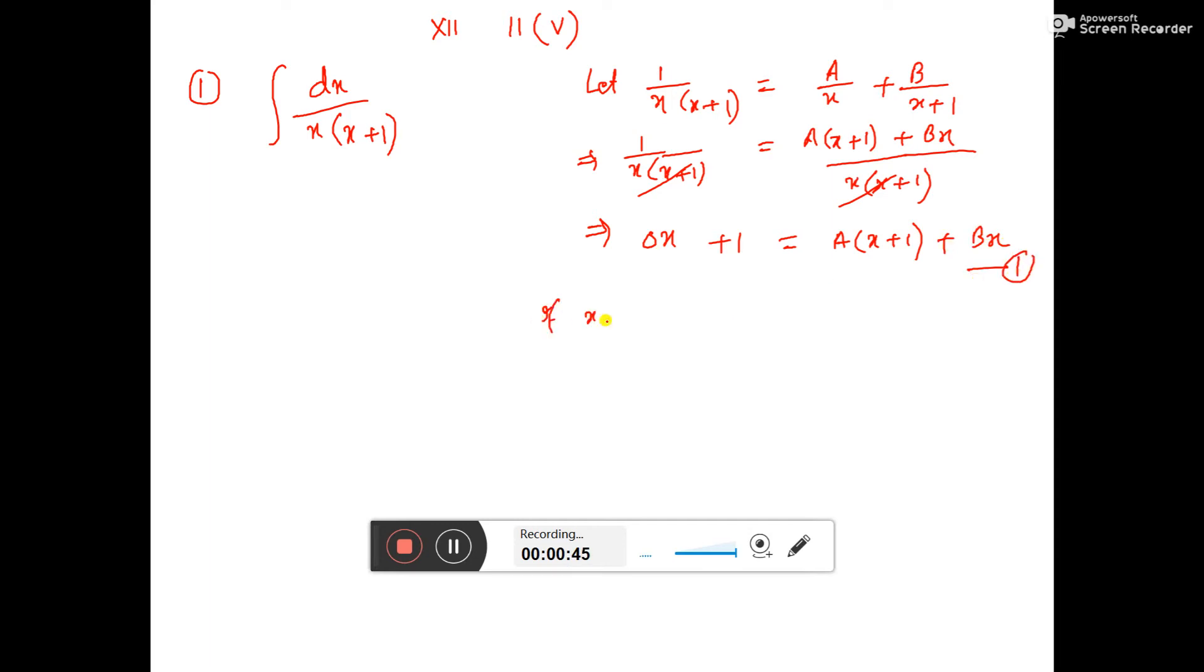If you put x equal to 0 in equation 1, the left side becomes 1. On the right side, a into x plus 1 becomes a into 1, which is a, and bx becomes 0. Therefore, 1 equals a, so a equals 1.